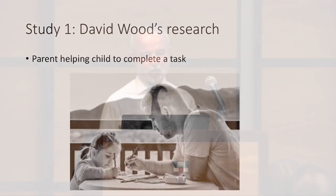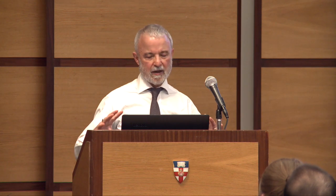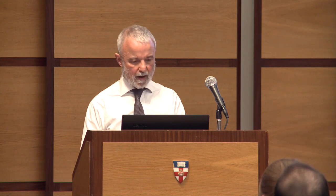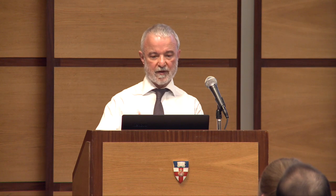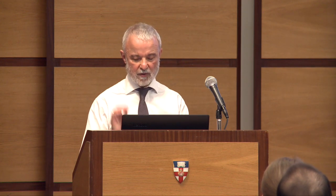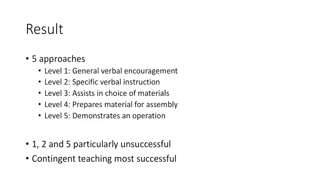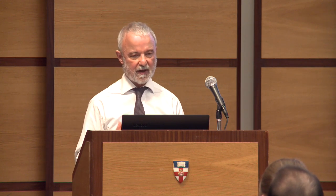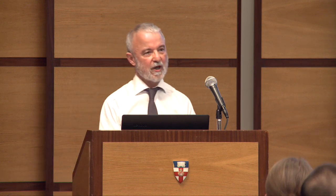David did a lot of research looking at Vygotsky's ideas about how children learn. He'd set children of three to four a particular task — in one case it was assembling a pyramid made up of different-sized blocks of wood. He got parents to help children, and this was just a natural observation; he wasn't asking them to take a particular style. From that he was able to identify five basic styles, ranging from the very general 'have a go' through to fully demonstrating it.